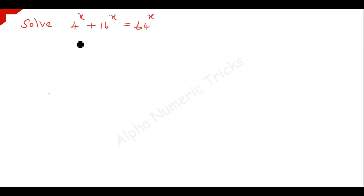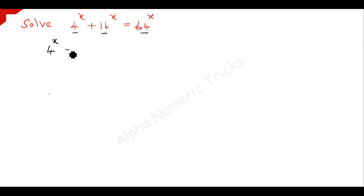What we have to remember here is that 4, 16, and 64 are all divisible by 4. So, take 4 to the power x equal to some variable t. Now, substitute and note that these terms can be written as multiples of 4.